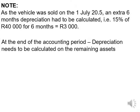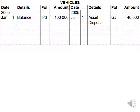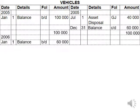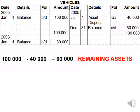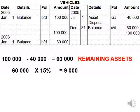At the end of the accounting period, depreciation needs to be calculated on the remaining assets. Our remaining assets are the balance of our vehicle account: we had $100,000 at the beginning of the year and sold $40,000, leaving us with $60,000. The remaining assets are calculated as opening balance minus the cost of the assets disposed of. We still need to calculate depreciation on the $60,000, which is $60,000 times 15%, equaling $9,000.